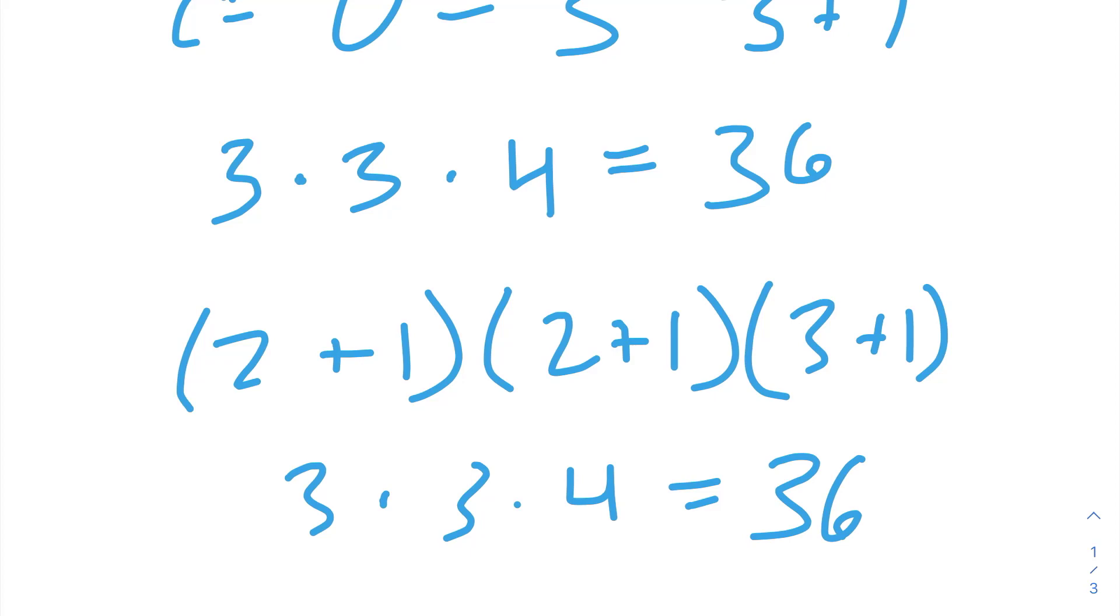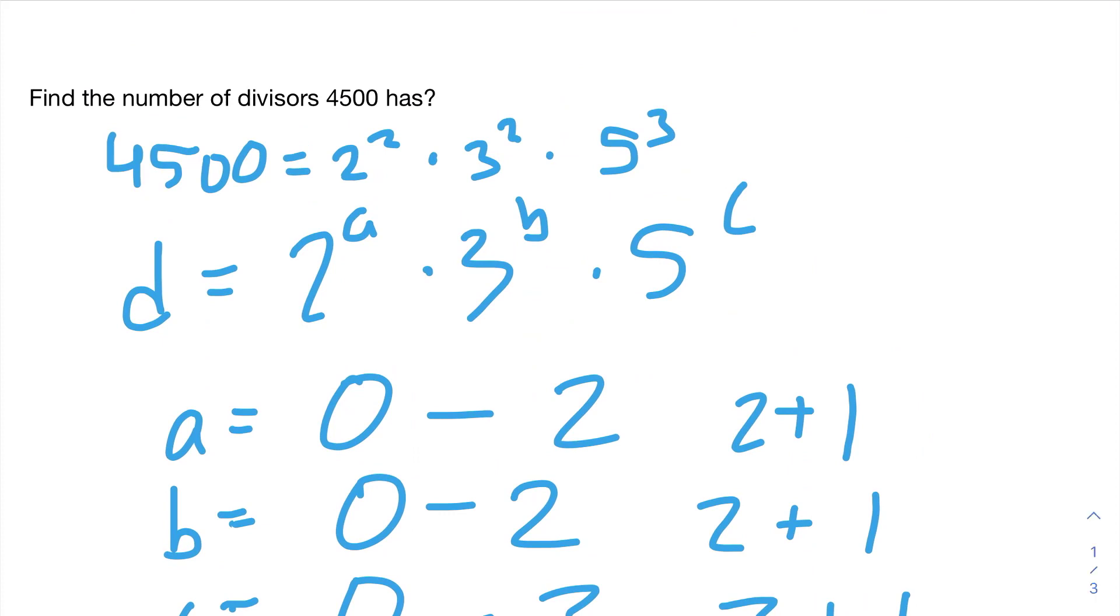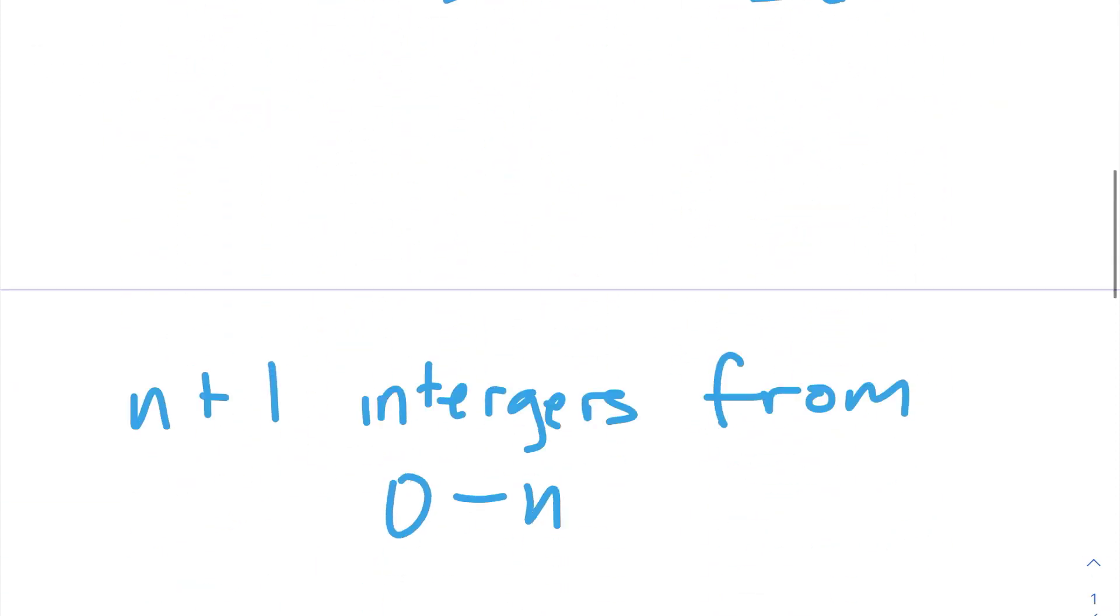That means all we have to do to find out how many factors a number has is find its prime factorization, then take all of the exponents in each of the primes and add 1 to it. So, let's go do another example.